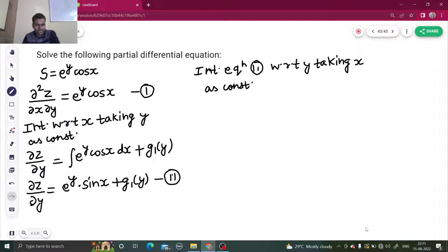So what we will get now: z equals integral of e^y sin x with respect to y, plus integral of g₁(y) dy. This integration will also have a constant. Because you are treating x as constant, let's name that g₂(x).